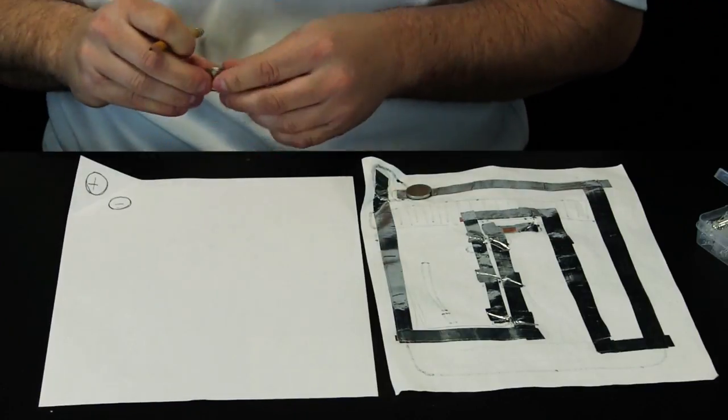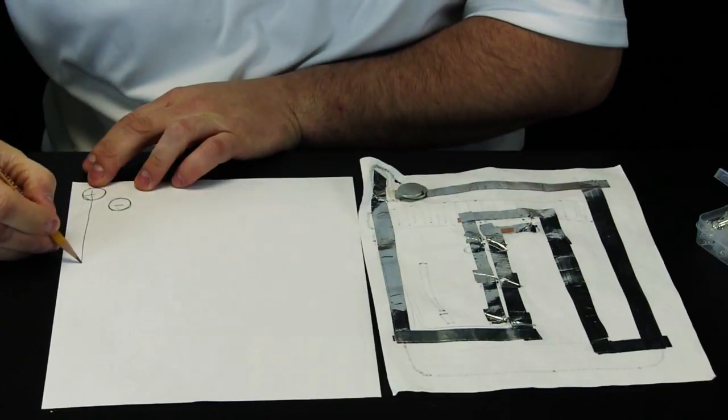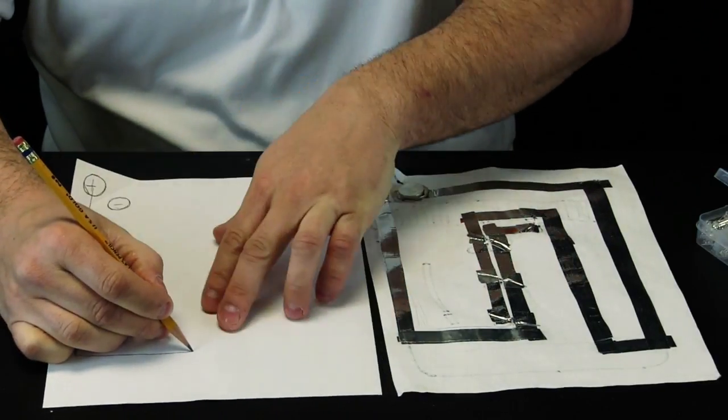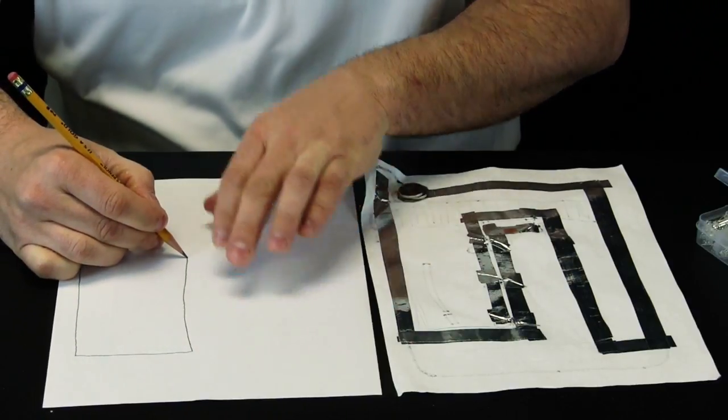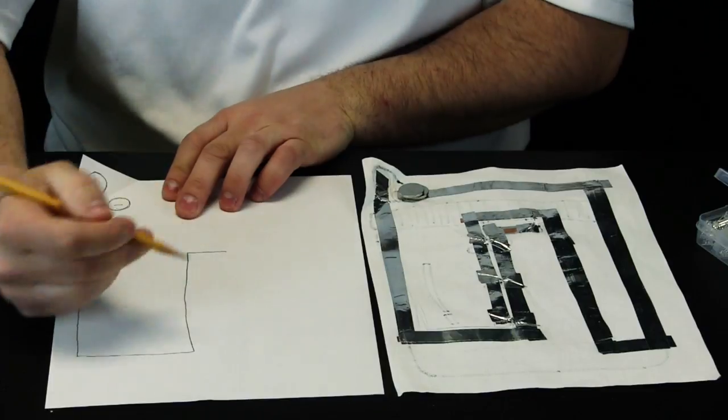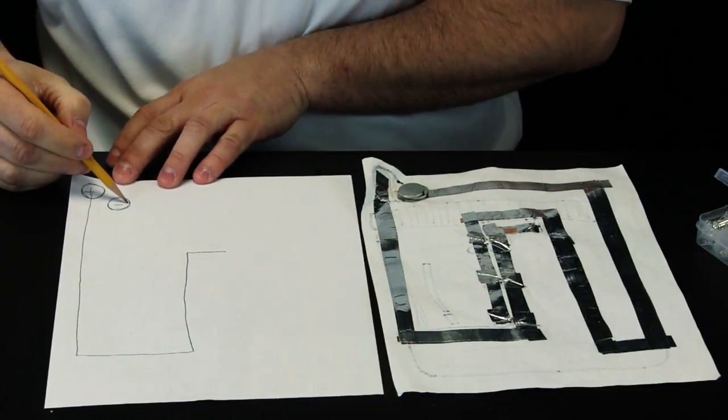Now I need to draw the pathway. So I am going to come down, come over, come up, come over. I could really draw any path I wanted to. Now I am going to take the negative path.